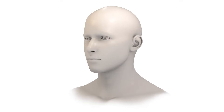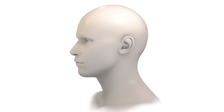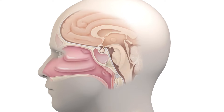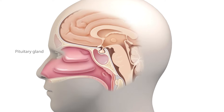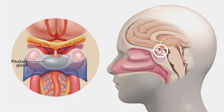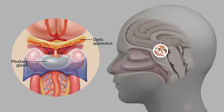The endoscopic endonasal approach provides unique access to the ventral aspect of the skull base. The pituitary gland is located at the center of the skull base and is surrounded by critical neurovascular structures. Above the pituitary gland, we have the optic apparatus. On each side of the gland, we have the carotid arteries, which provide blood flow to the brain. And below the pituitary, we have the brainstem and the basilar artery.